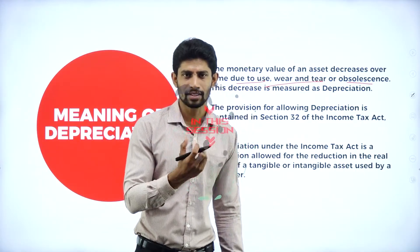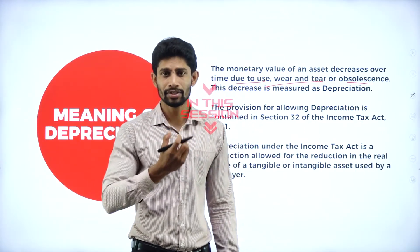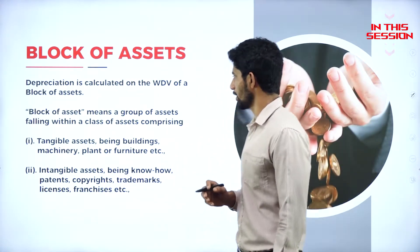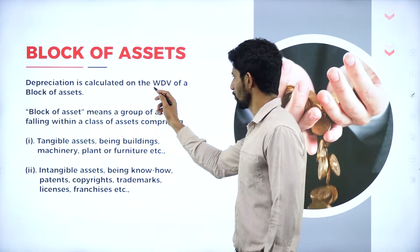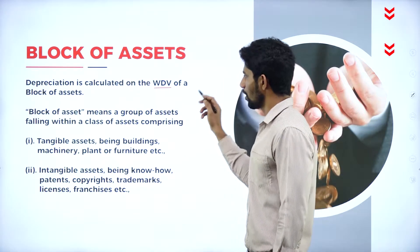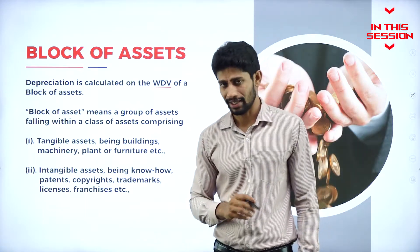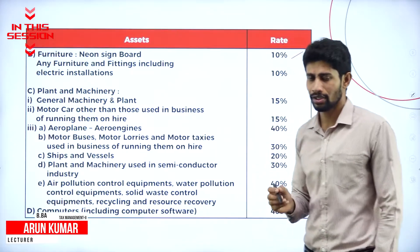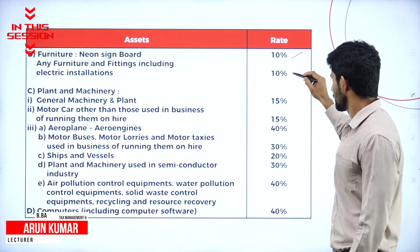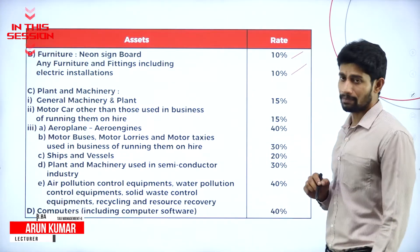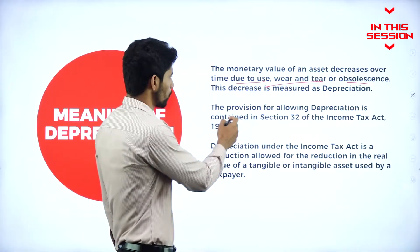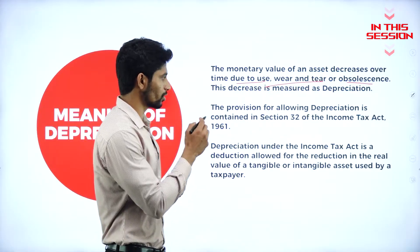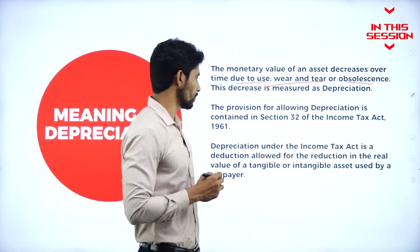The decrease in value of an asset is measured in the form of depreciation. Depreciation is calculated on the written down value, that is WDV value, of a block of asset. Any furniture and fittings including electric installation also attracts 10 percent depreciation. The provision for allowing depreciation is contained in Section 32 of the Income Tax Act 1961.